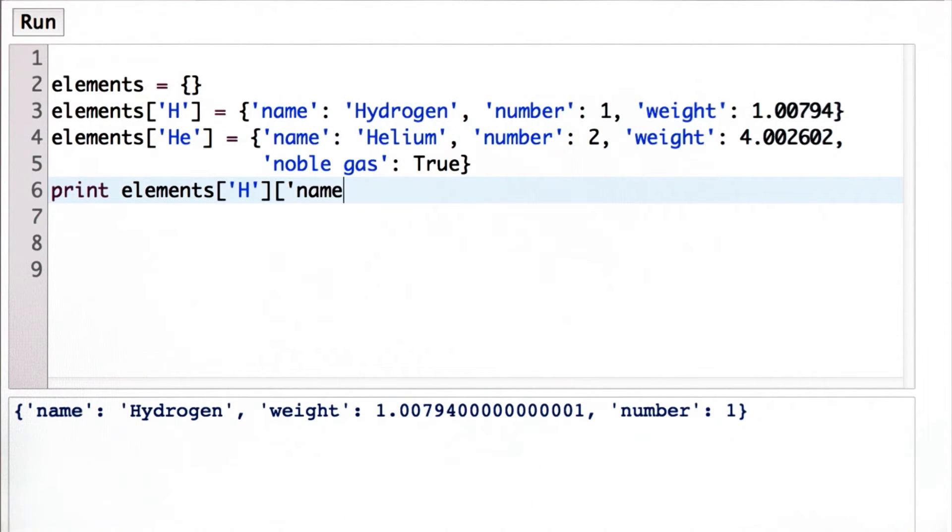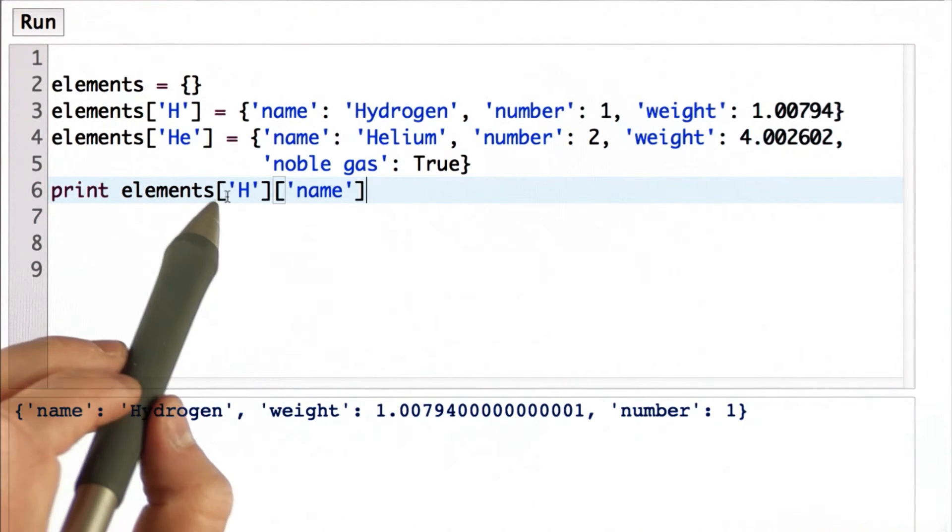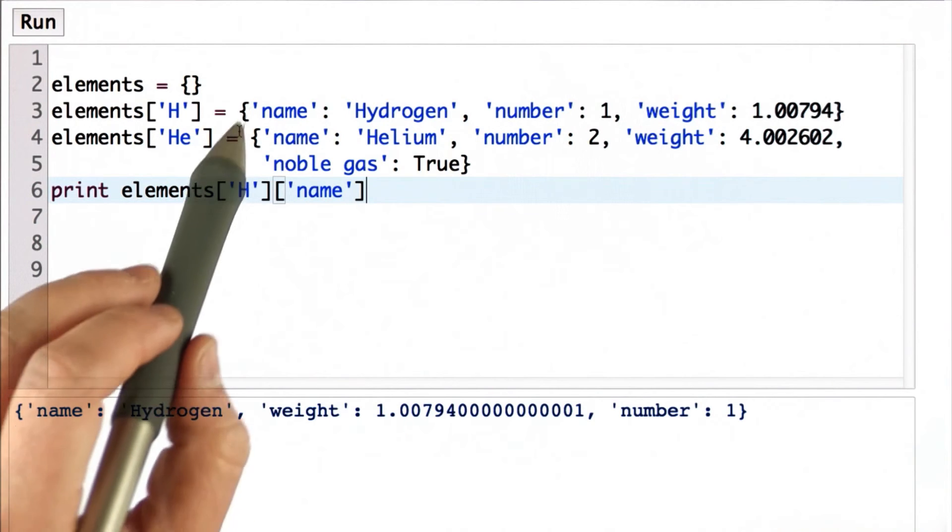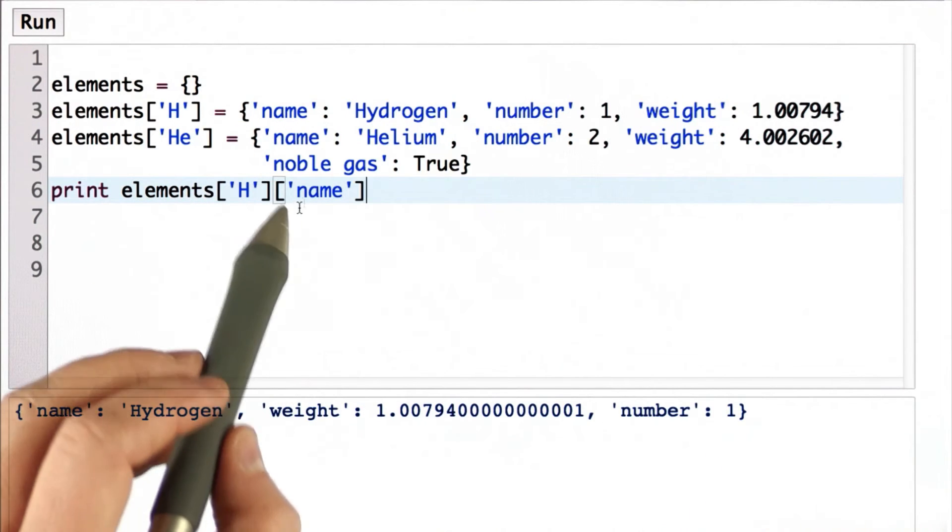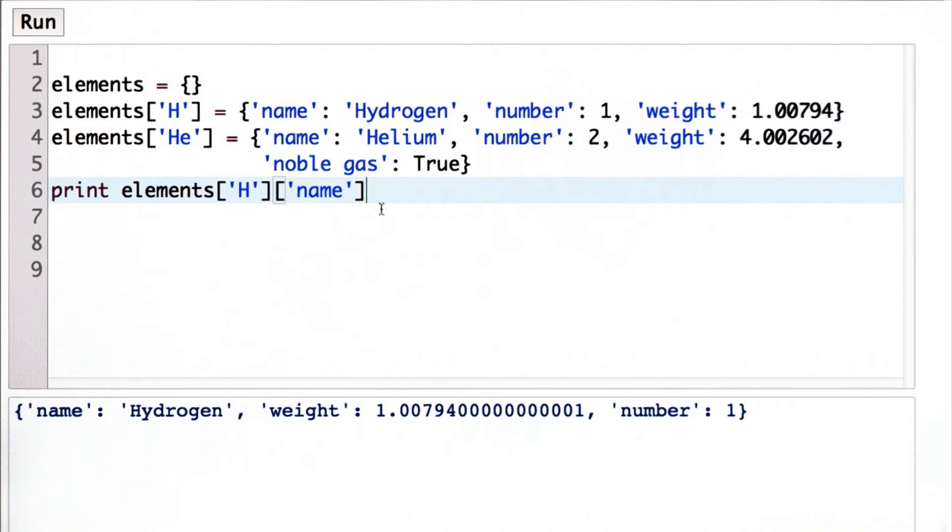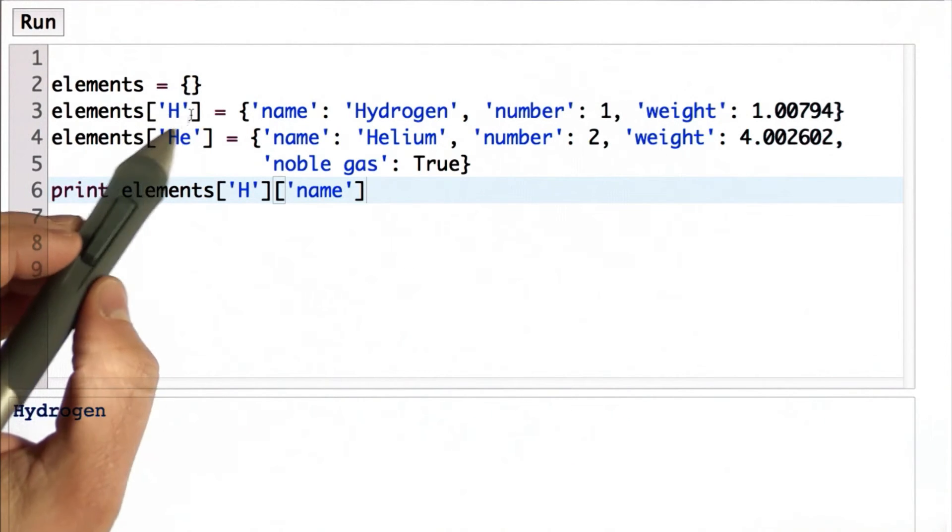But we can do another lookup. So now we're looking up element H. That gets us the dictionary here. And then we're looking up in that dictionary the value name. And that will give us the name of the element whose symbol is H.